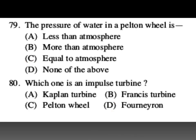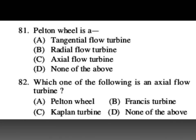The pressure of water at the nozzle of a Pelton wheel is equal to atmospheric pressure. Which one is an impulse turbine? Pelton wheel is your impulse turbine. All of options A, B, and D are reaction turbines. Pelton wheel is a tangential flow impulse turbine.